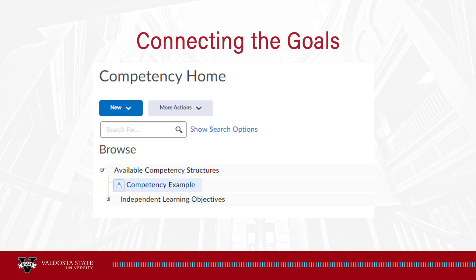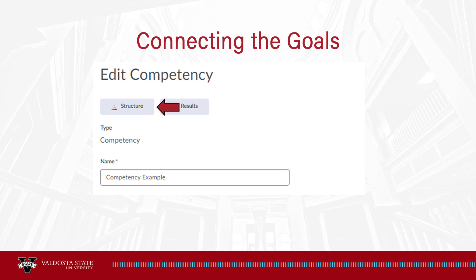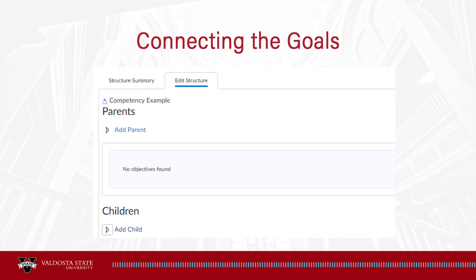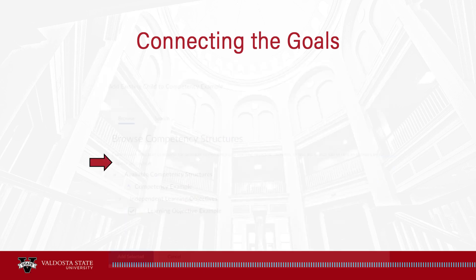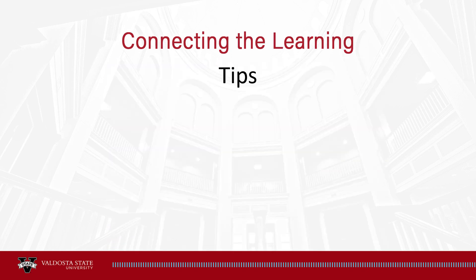After you've created your competencies and learning objectives, you need to connect them. On the competency page, click the competency you want to connect. On the page that opens, click the Structure button, then go to the Edit Structure tab, select Add Child under the Children heading, and click Existing Learning Objective. Select the appropriate learning objective and click the Add Selected button.